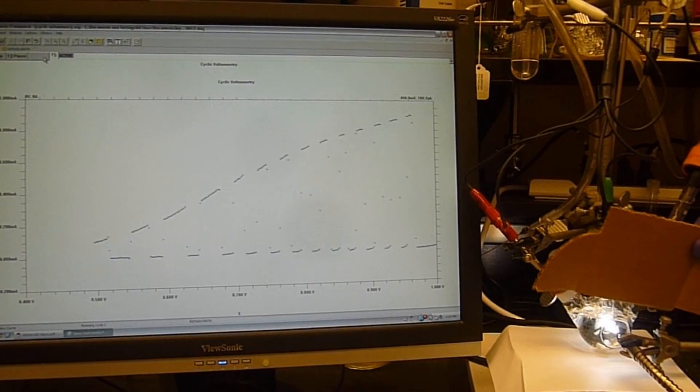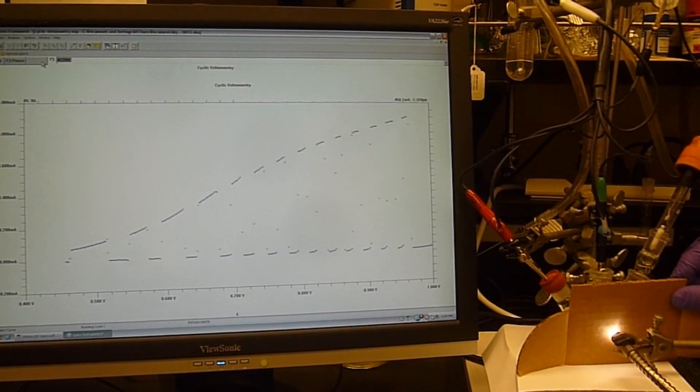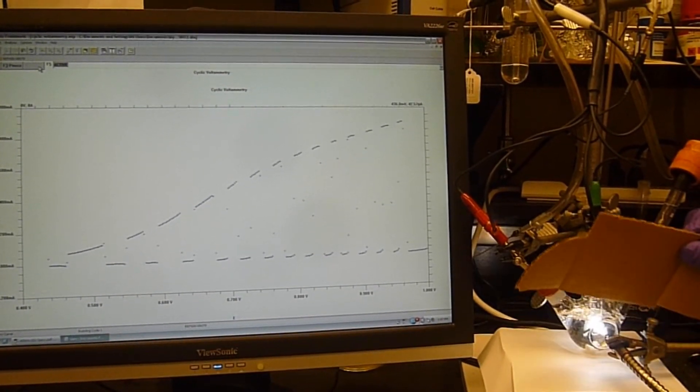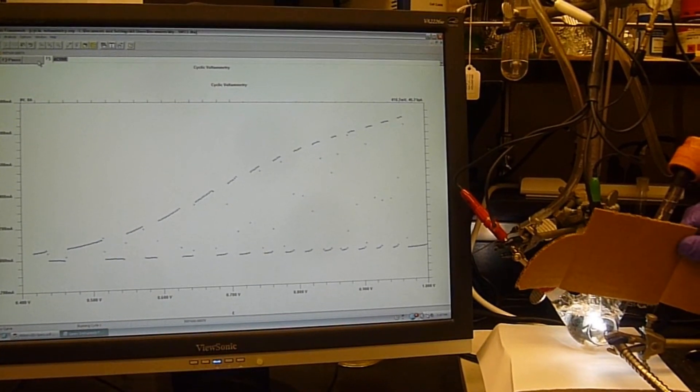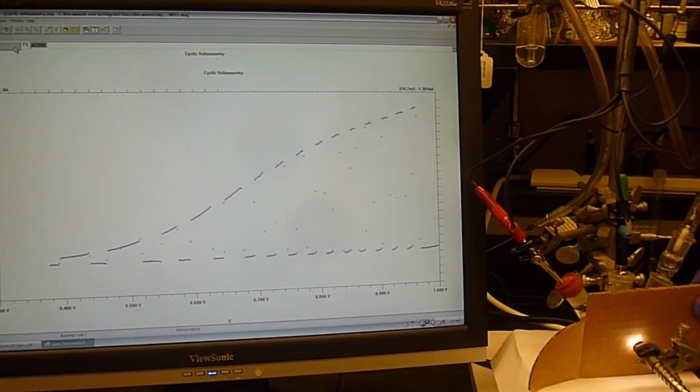This is a linear sweep voltammogram of nano-sized tungsten oxide on FTO substrate with a chopped xenon light source. You see the anodic photocurrent. It has a positive current measurement when the light is irradiated on the film.